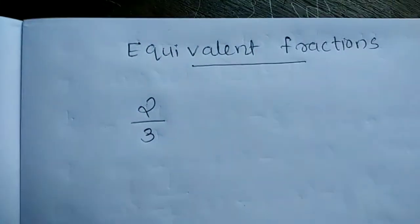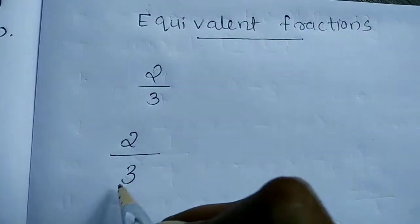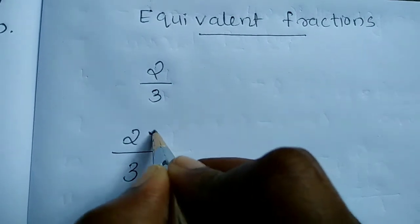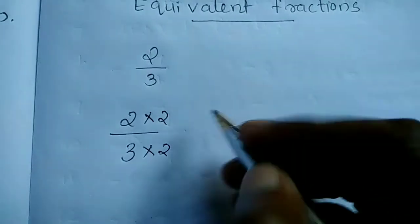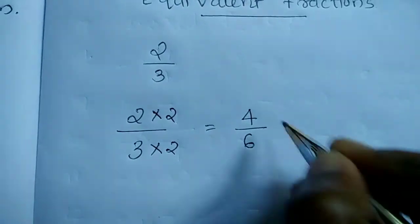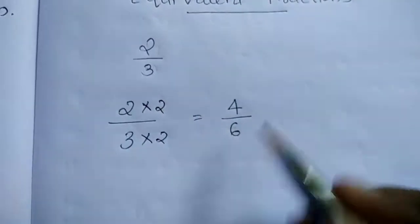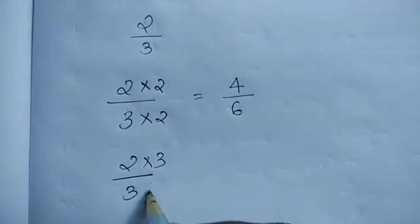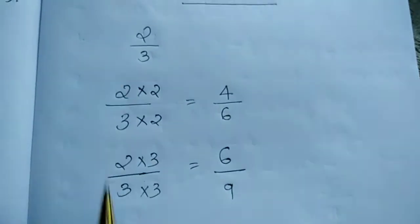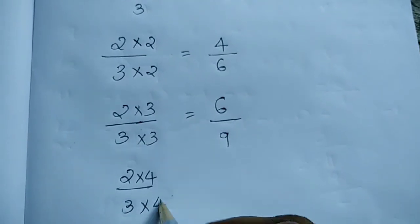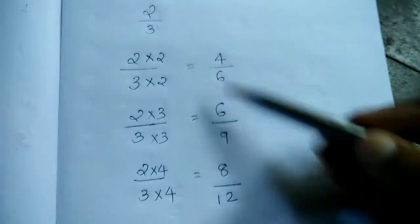Here we have to find out the equivalent fraction of 2 by 3. Multiply numerator and denominator by the same number. 6 by 9 is an equivalent fraction of 2 by 3. Multiplying again by 4, we get 8 by 12. 8 by 12 is also an equivalent fraction of 2 by 3.